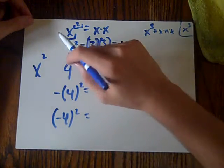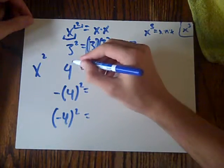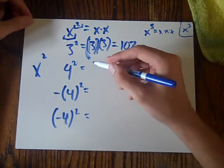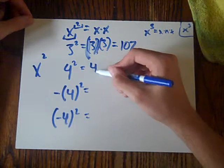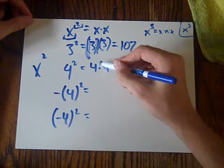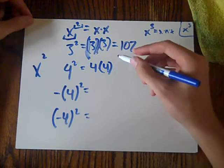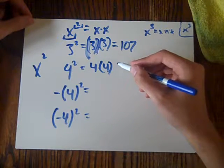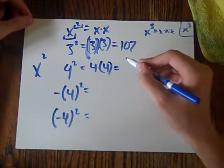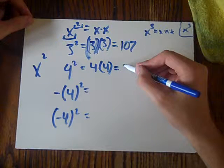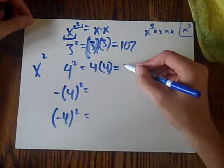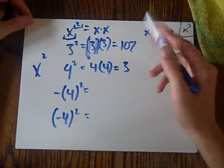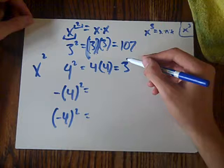4 squared, let's write the 2 better. 4 squared equals 4 times 4. Let's put the parentheses around this one. And that one equals, what does it equal? I don't know. It equals 3. So that's what it equals.